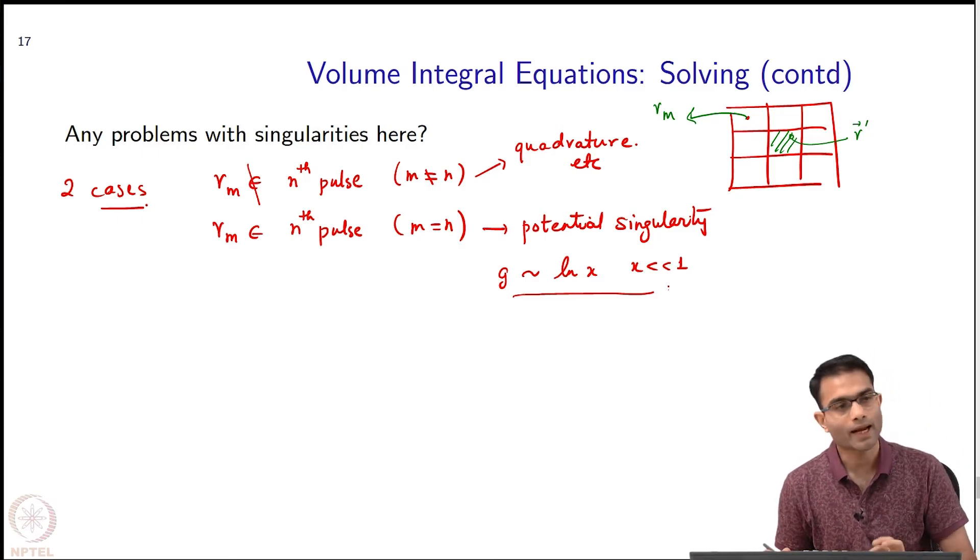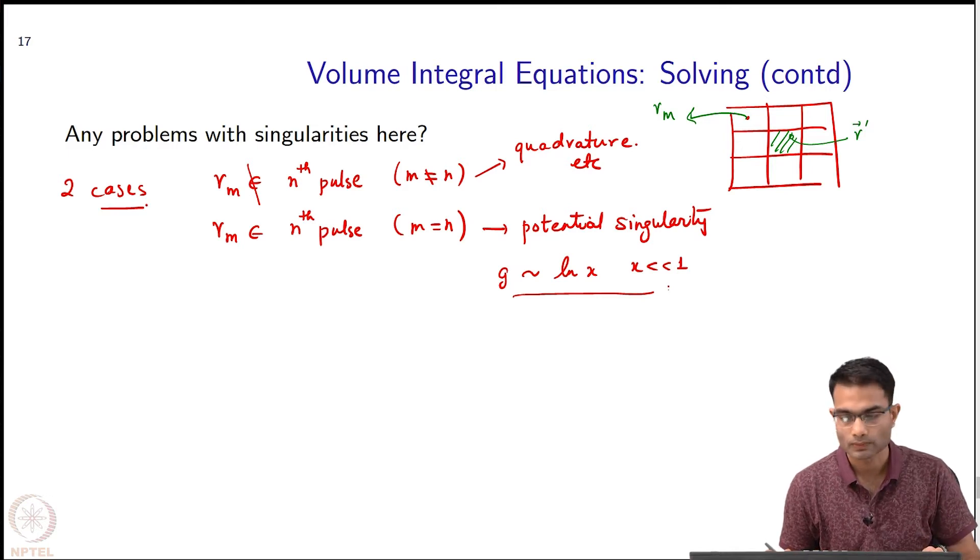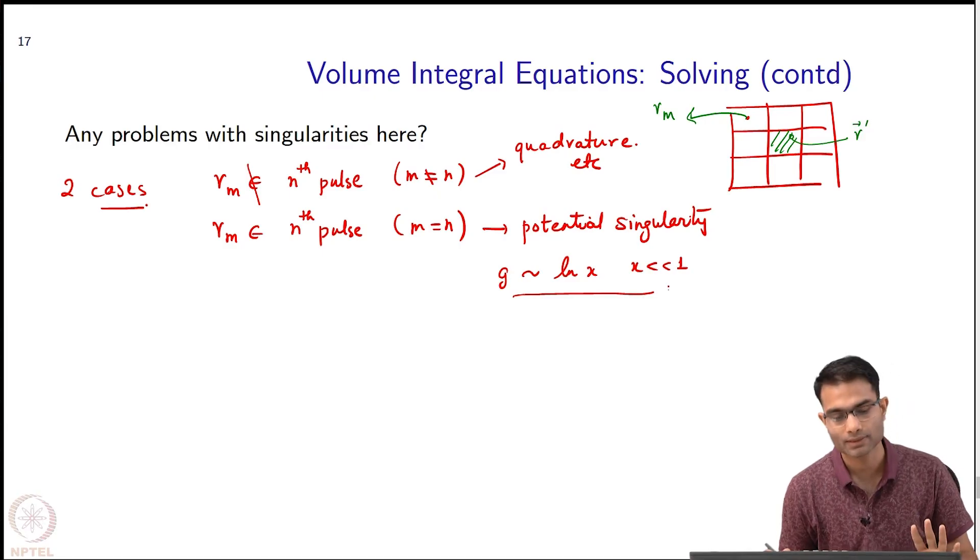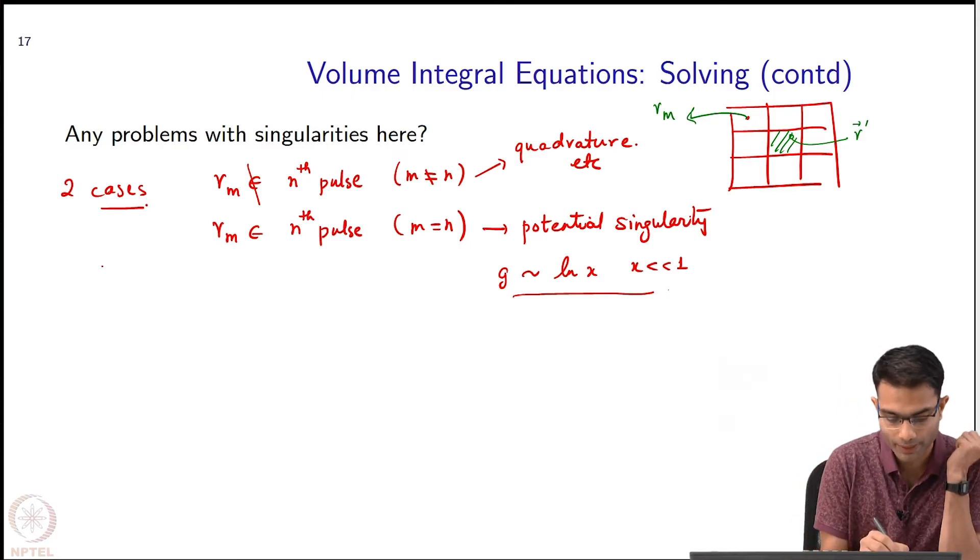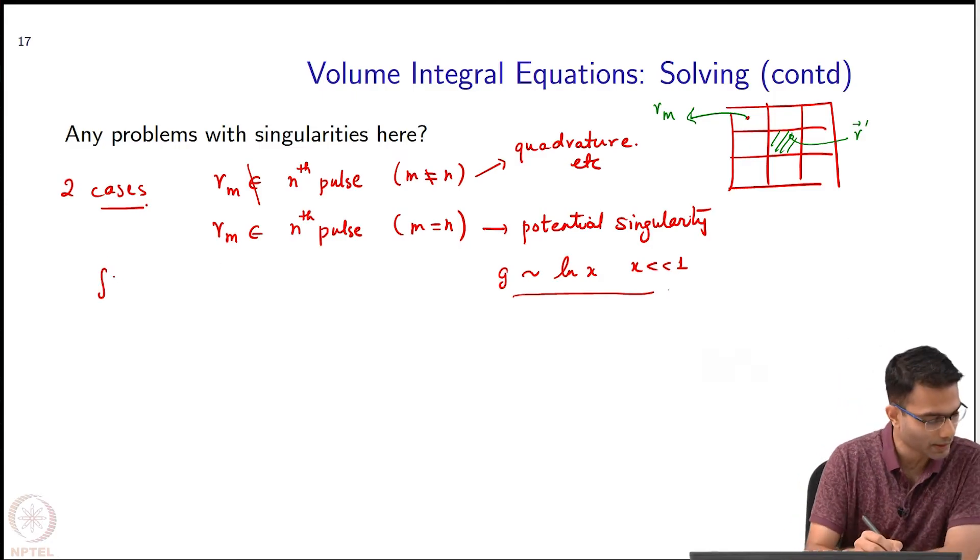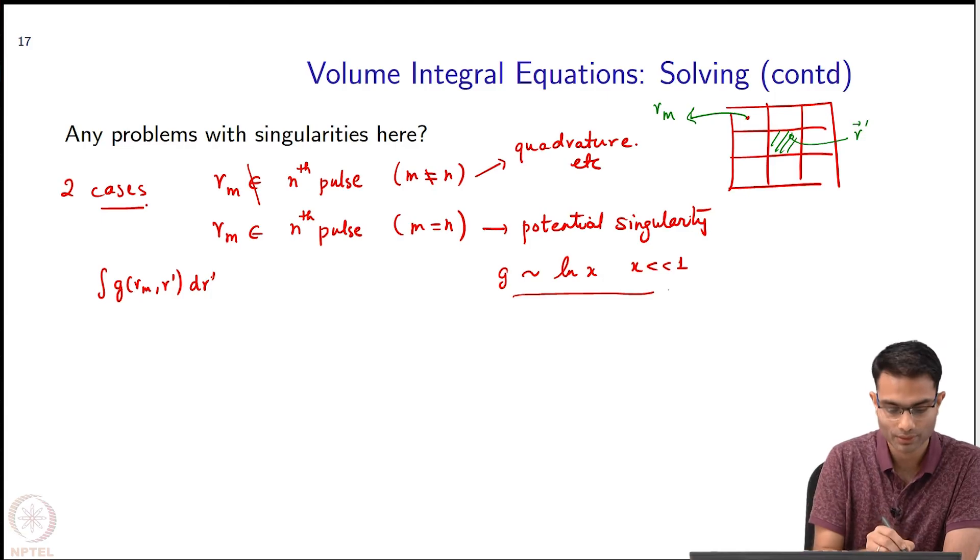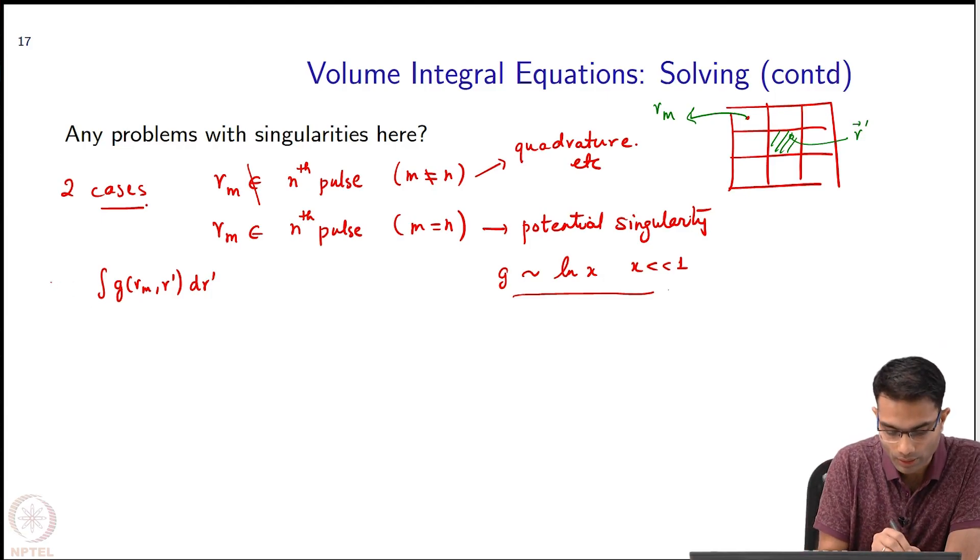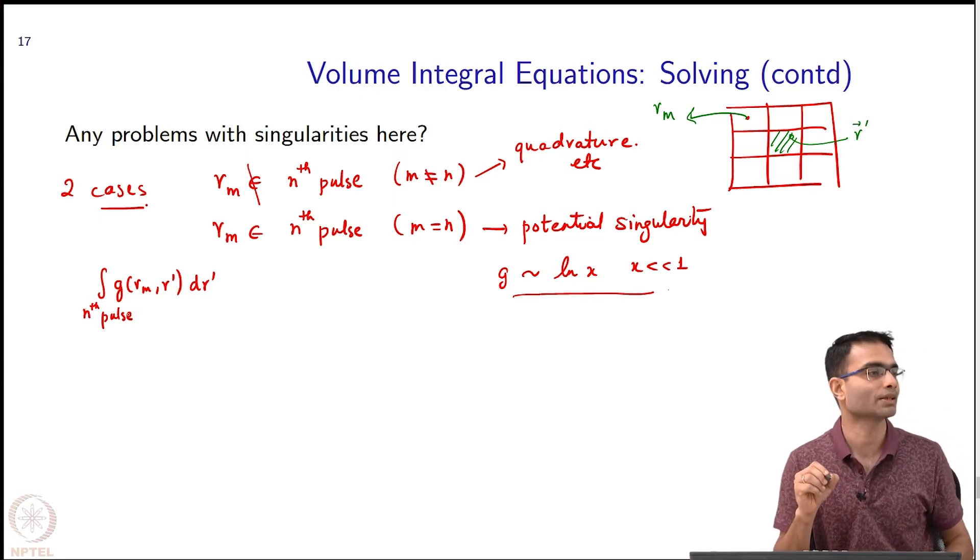Now we can go ahead and do this integration, and you can either use quadrature rules, but in this case, nature has been even kinder to us. What am I integrating? I am integrating this Green's function G(r_m, r') dr' - essentially this is the integral over the nth pulse. This is the integration that I have to worry about.